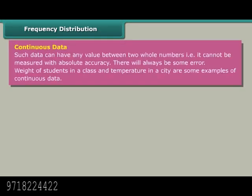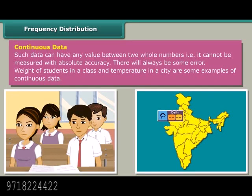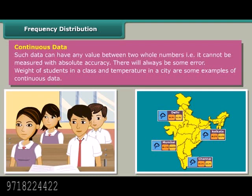Continuous data can have any value between two whole numbers. That is, it can be measured with absolute accuracy. There will always be some error. Weight of students in a class and temperature in a city are some examples of continuous data.